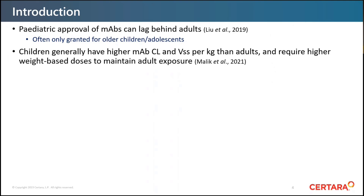Pharmaceutical companies are legally required to consider studying new drugs in paediatric patients, but approval of monoclonal antibodies for paediatrics has generally lagged behind adults and is often only granted for older children and adolescents. In 2018, only 20 of the 68 licensed monoclonal antibodies by the FDA were also licensed in children, and often only in children over six or even 12 years of age. Ideally we'd like to streamline the process of getting treatments to young children more quickly. In terms of PK, monoclonal antibodies tend to have higher clearance and volume per kilogram of body weight than adults, and so require higher weight-based doses to maintain the same exposure — meaning it's not as simple as applying a single per-kilogram dose across the entire age range.